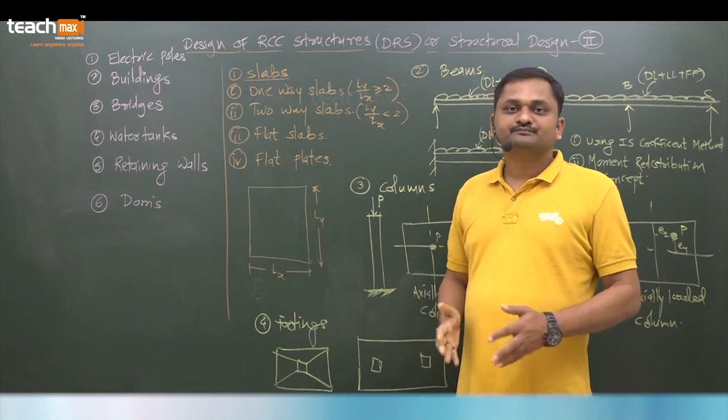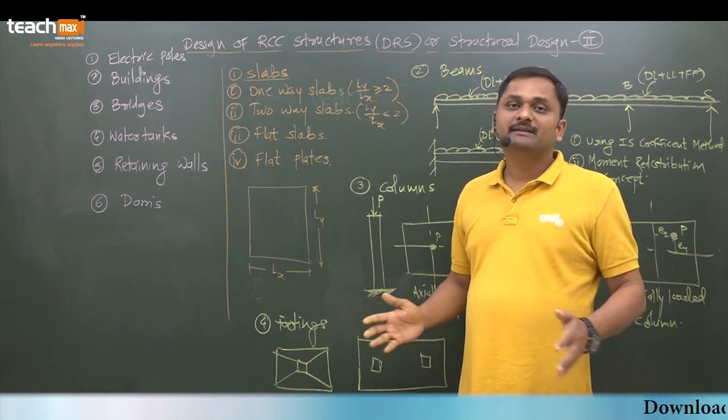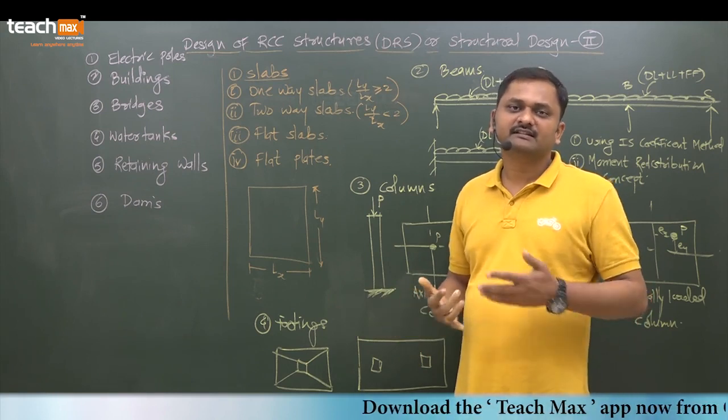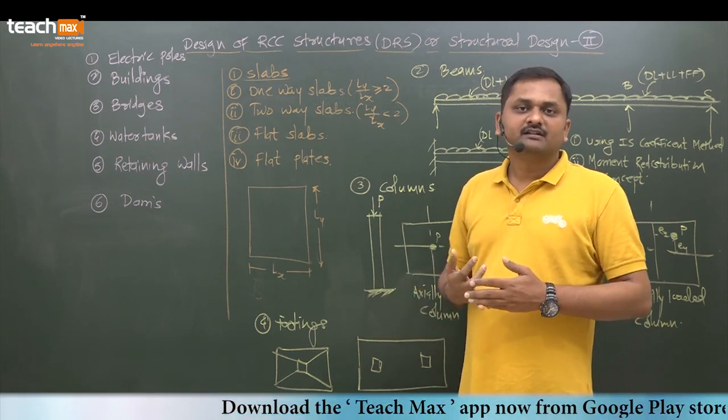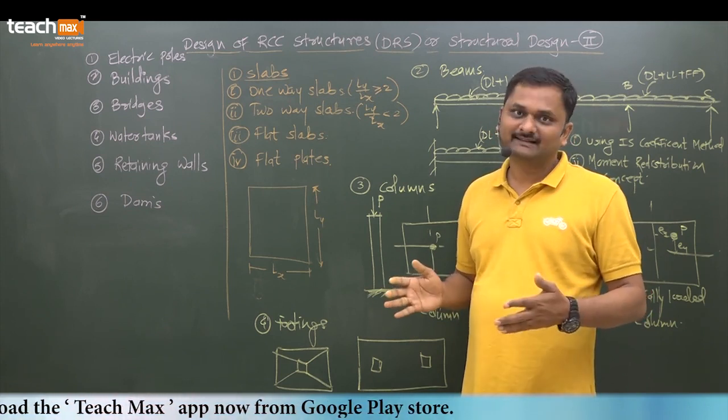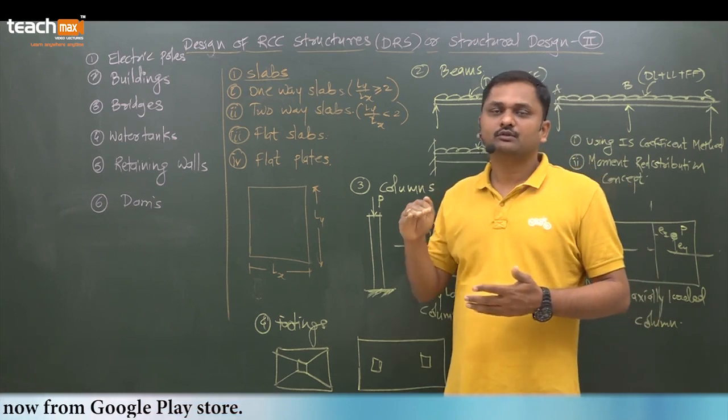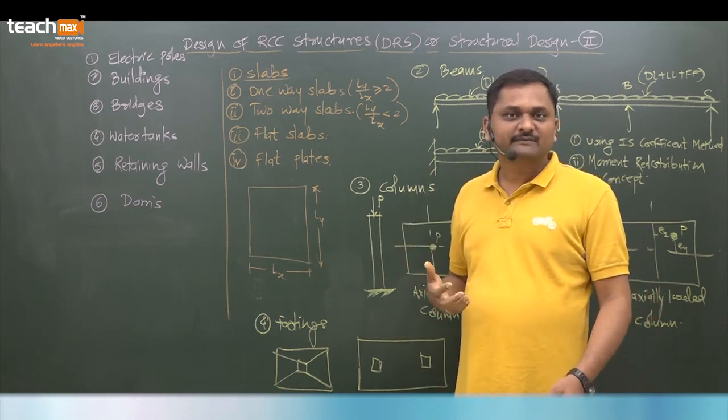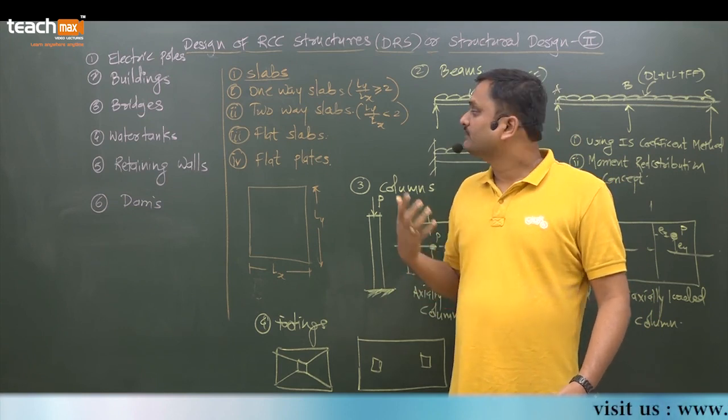Flat slabs, where if you want a beamless construction, so generally proper headroom is required. In commercial buildings we go with flat slabs where beamless system is there. It means directly the load of slab is transferred into the column. That is called flat slab.